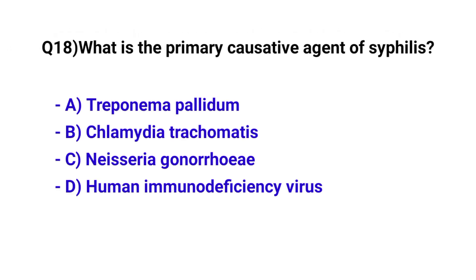Question number 18. What is the primary causative agent of syphilis? The correct option is A. Treponema pallidum.